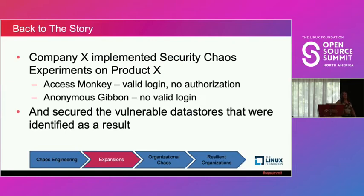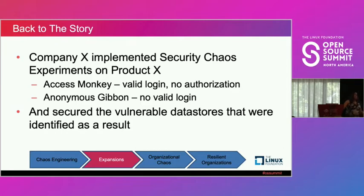Company X used security chaos engineering for risk number three on Product X. Some tests they ran included Access Monkey — a user with a valid login but without proper authorization — for example attempting to access a database table or fields they have no right to access — and validating whether that data is protected and secured. Also Anonymous — given no valid login at all.